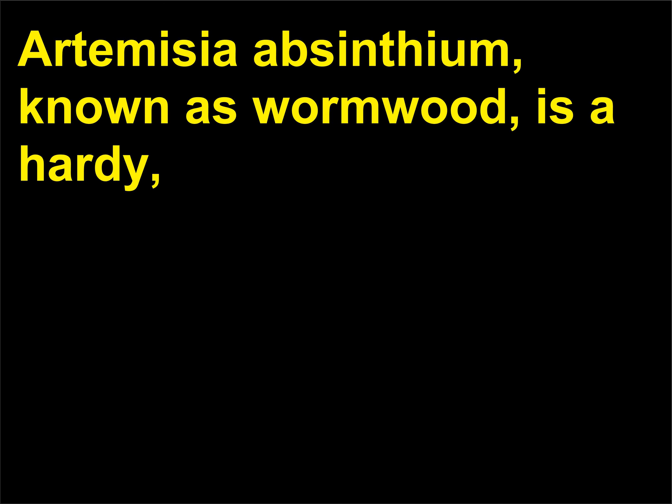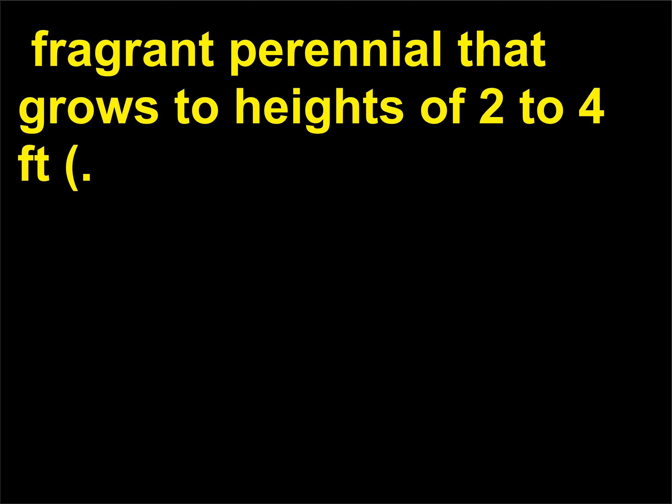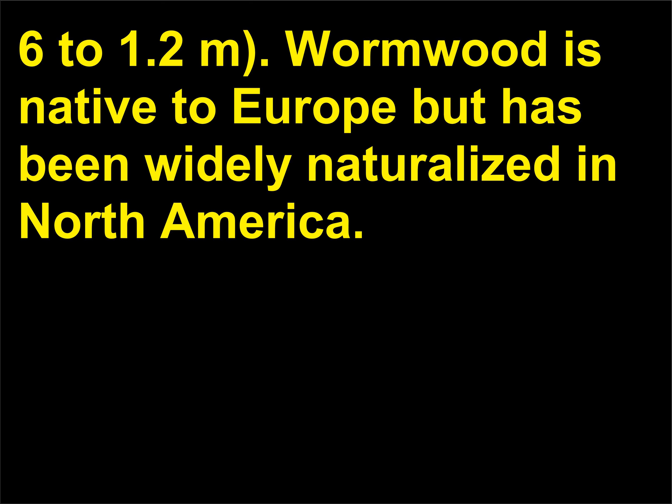What is wormwood? Artemisia absinthium, known as wormwood, is a hardy, fragrant perennial that grows to heights of 2 to 4 feet, or 0.6 to 1.2 meters. Wormwood is native to Europe but has been widely naturalized in North America.